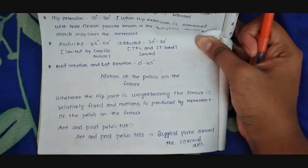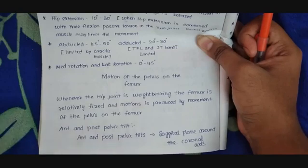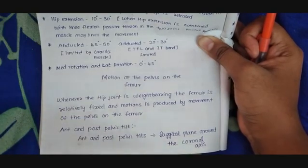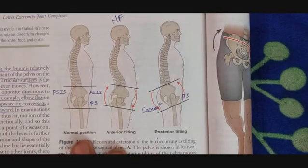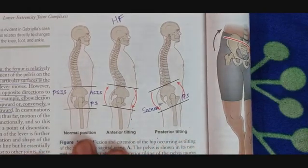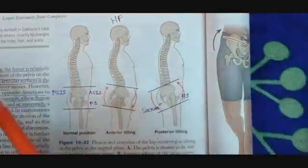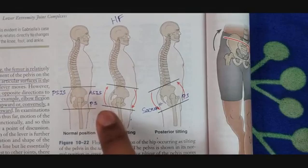Motion of the pelvis on the femur: whenever the hip joint is weight-bearing, the femur is relatively fixed and motion is produced by the movement of the pelvis on the femur. Anterior and posterior pelvic tilt occur around the sagittal plane and the coronal axis. In the normal position, the anterior superior iliac spine and posterior superior iliac spine are aligned horizontally, and the anterior superior iliac spine is aligned vertically with the pubic symphysis. Anterior tilting of the pelvis produces hip flexion and posterior tilting produces hip extension.